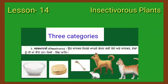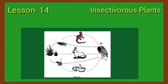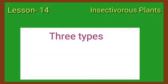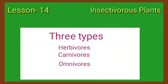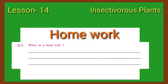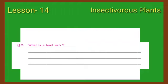So kids, I hope you have a good understanding of the food web and the three types of animals: herbivores, carnivores, and omnivores. In today's homework, you have to answer question no. 2: What is a food web? Write beautifully in your own words. Thank you, bye.